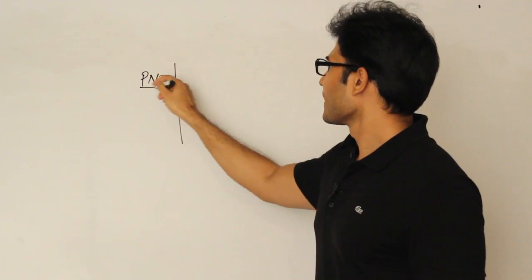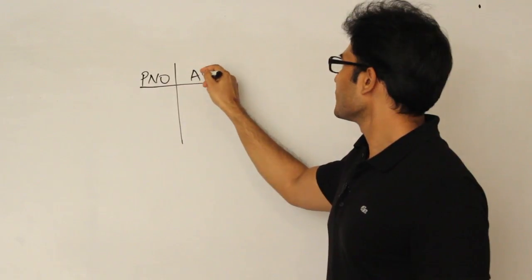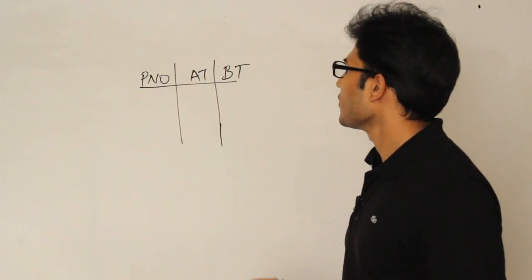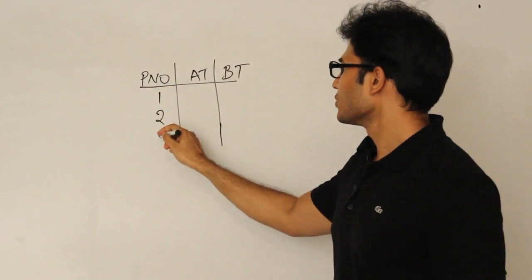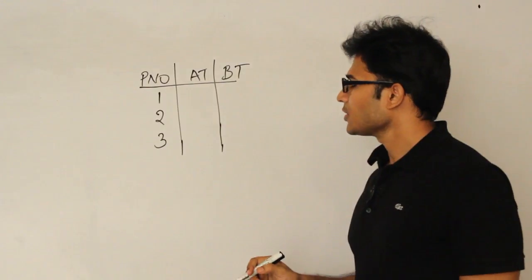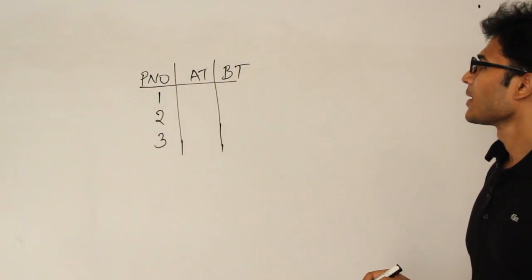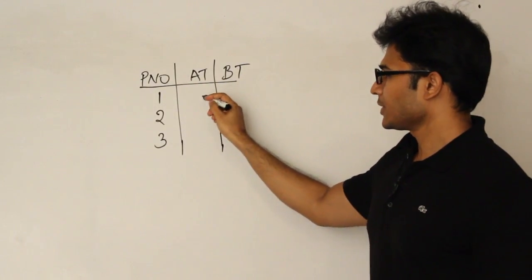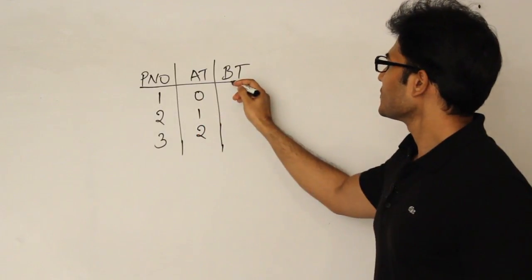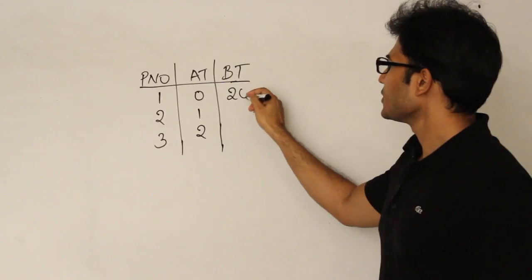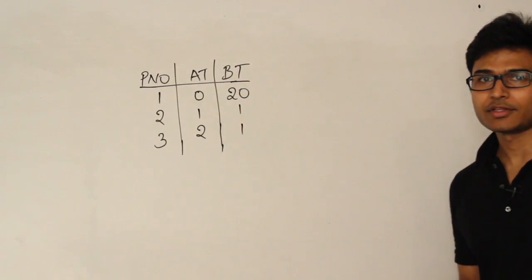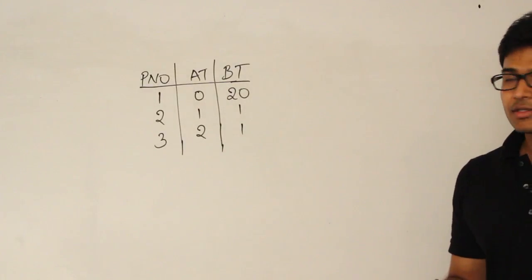Let us say we have a table with process number, arrival time, and burst time. Process numbers are 1, 2, 3. Arrival times are 0, 1, and 2. Burst times are 20, 1, and 1.